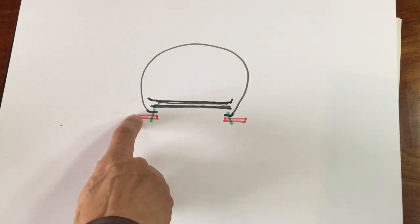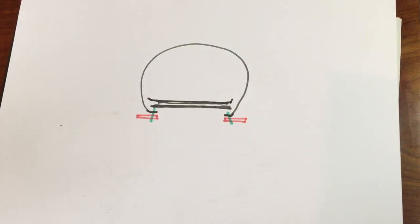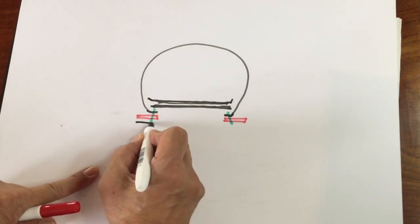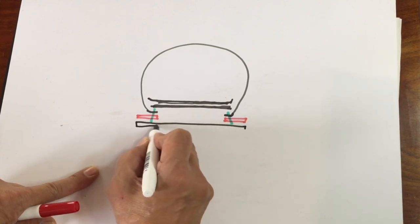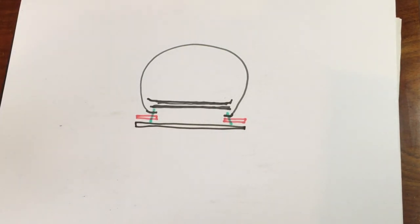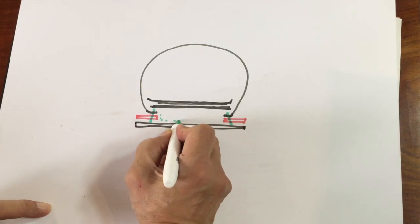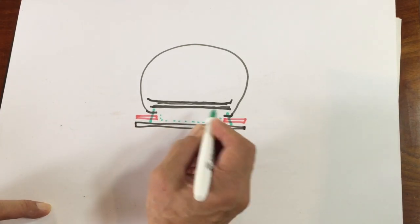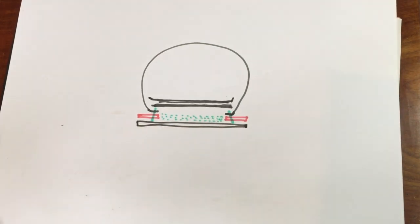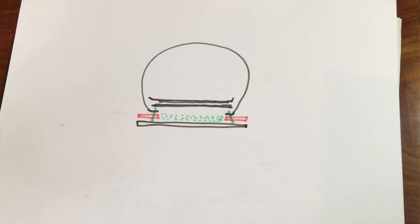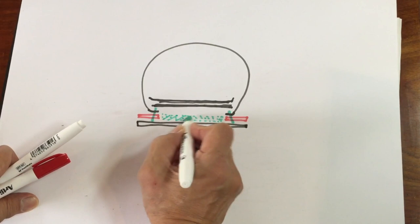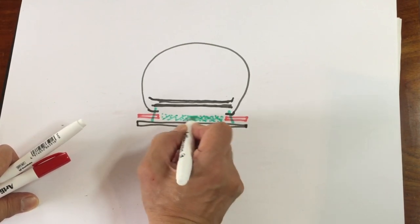So once that welt is put on, you then have your midsole. But of course, before you put your midsole on, if you spot the thickness of the welt, there is this little cavity here caused by the welt. And that's usually filled in with cork.